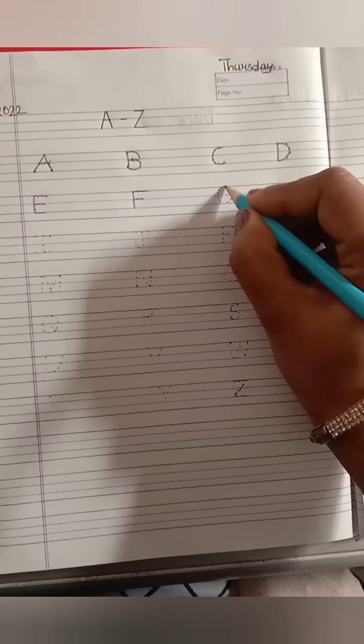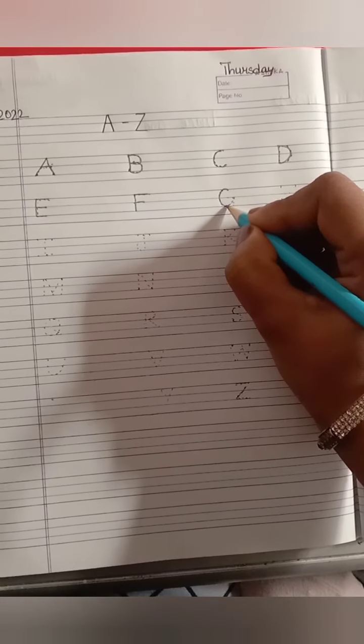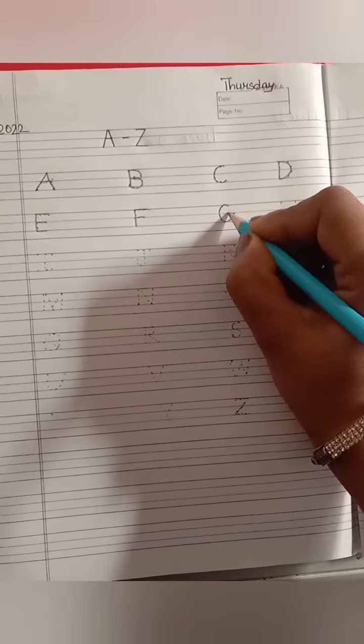F ke baad hum letter G. Next, we will write letter G. G says gu.